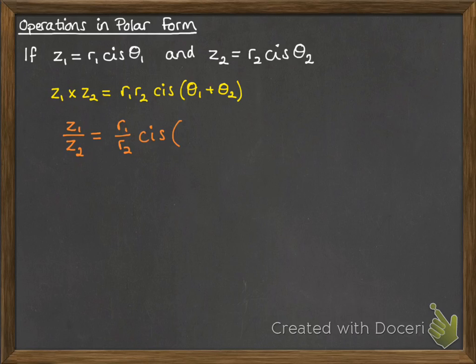You can also do a similar thing with division, where if you're doing one complex number divided by another, you will divide the modulus and subtract the arguments.